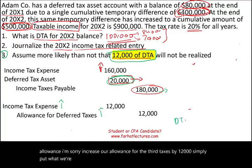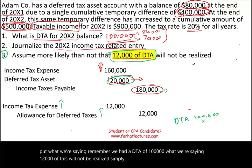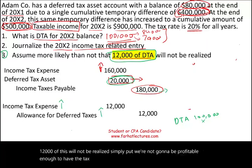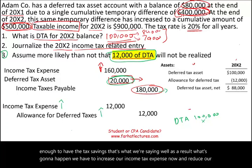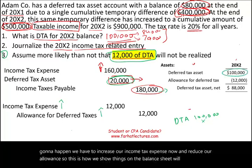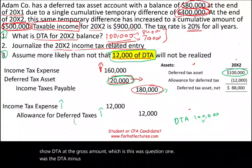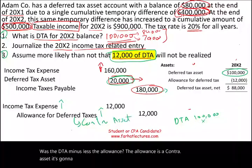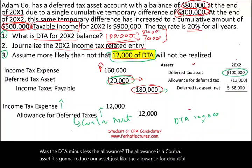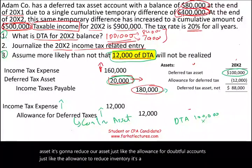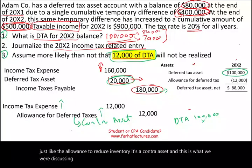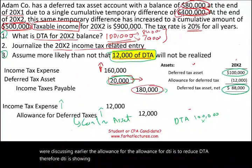Simply put, we had a DTA of $100,000, and we're saying $12,000 of this will not be realized — we won't be profitable enough to have the tax savings. As a result, we increase income tax expense and set up the allowance. On the balance sheet, we show DTA at the gross amount of $100,000 minus the allowance — which is a contra asset, just like allowance for doubtful accounts or allowance to reduce inventory — resulting in a net DTA of $88,000.